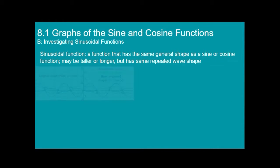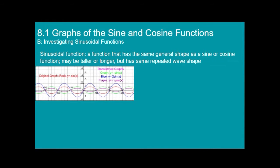Here's an example: these are four different sinusoidal functions, all variations of sine. In this case the periods are all the same, but you can see some are above the x-axis, some are below at certain parts, some are taller, some are shorter. Cosines are also sinusoidal functions because they're just shifts of sine functions.